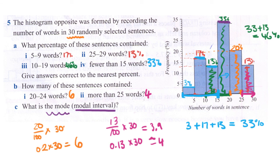This is the highest bar here. So the modal number, the actual mode, what number of words in a sentence occurred the most time, was somewhere between 15 and 19.